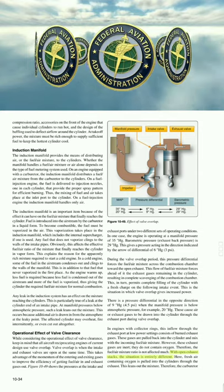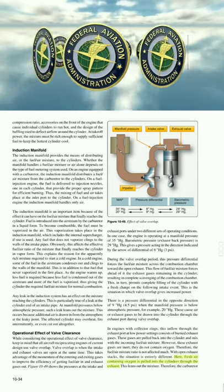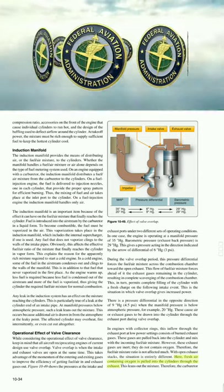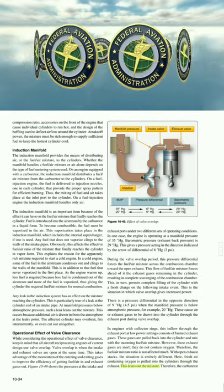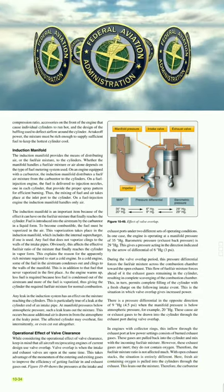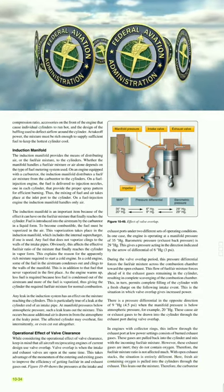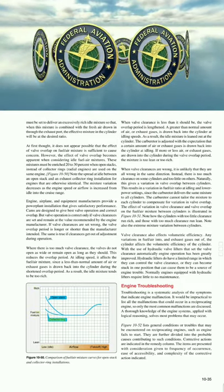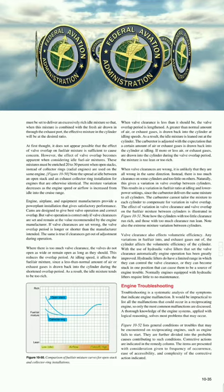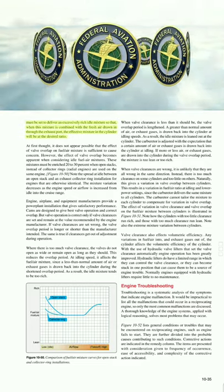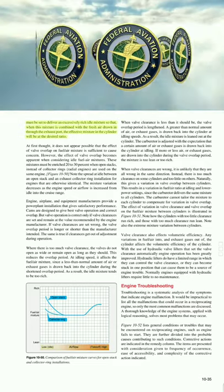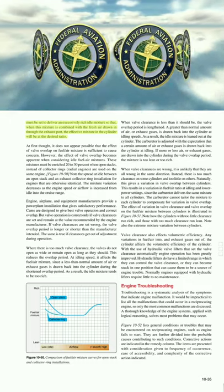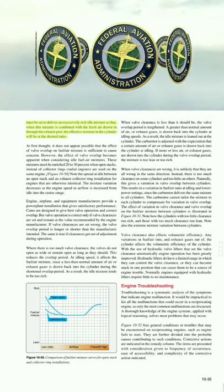With open exhaust stacks, the situation is entirely different — fresh air containing oxygen is pulled into the cylinders through the exhaust, leaning out the mixture. Therefore, the carburetor must be set to deliver an excessively rich idle mixture so that when combined with fresh air drawn in through the exhaust port, the effective mixture in the cylinder is at the desired ratio.